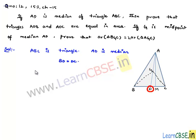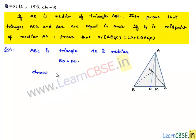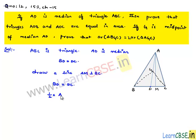In order to prove that areas of triangles ABD and ADC are equal, draw a line AM perpendicular to BC. Let us consider the condition that BD is equal to DC, and multiply both sides by half times AM. Then we get: half times AM into BD is equal to half times AM into DC.